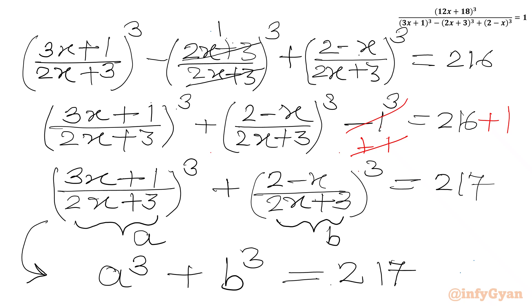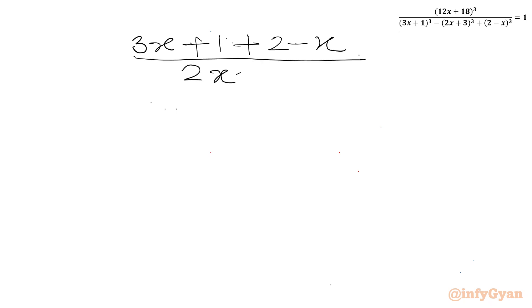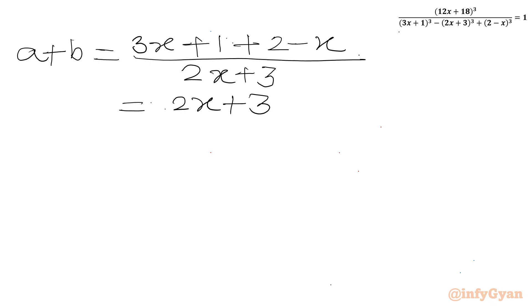Now we will find out A plus B. So I will write the numerator as (3x+1) plus (2-x), and the denominator is (2x+3). This simplifies to (3x - x + 1 + 2) over (2x+3), which gives (2x+3) over (2x+3), so A plus B is equal to 1.